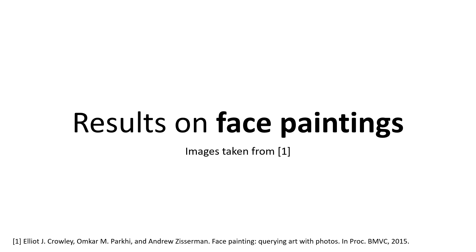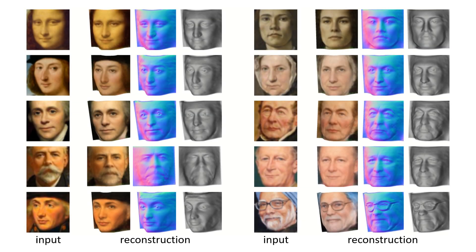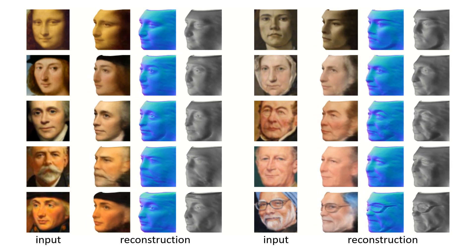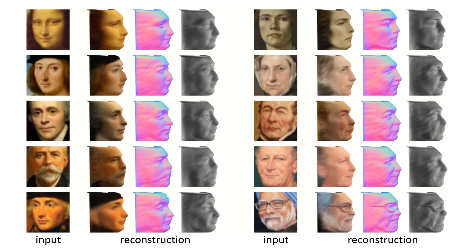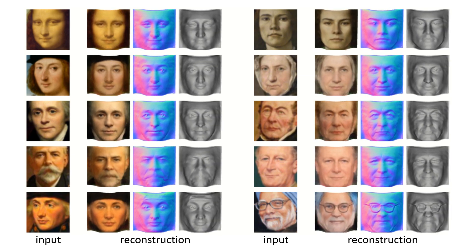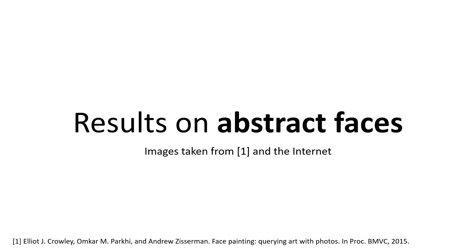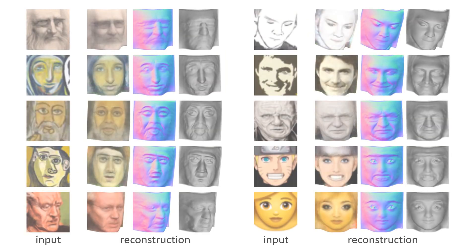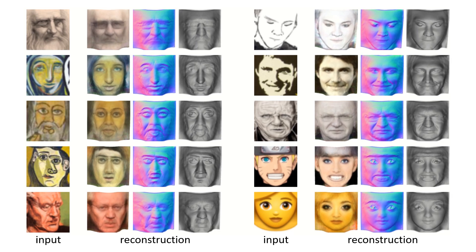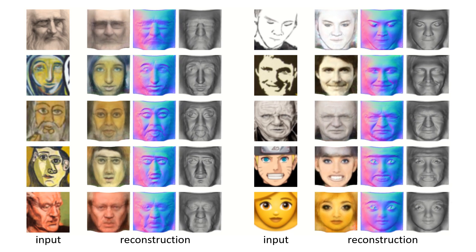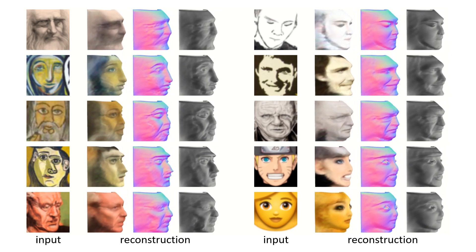The next slide shows the results on face paintings. These results are obtained from a model trained on real face images, without fine-tuning at all. Next, we show the results on abstract face drawings. Our trained model learns a shape prior on human faces and generalizes to abstract faces, including line drawings and cartoon images.